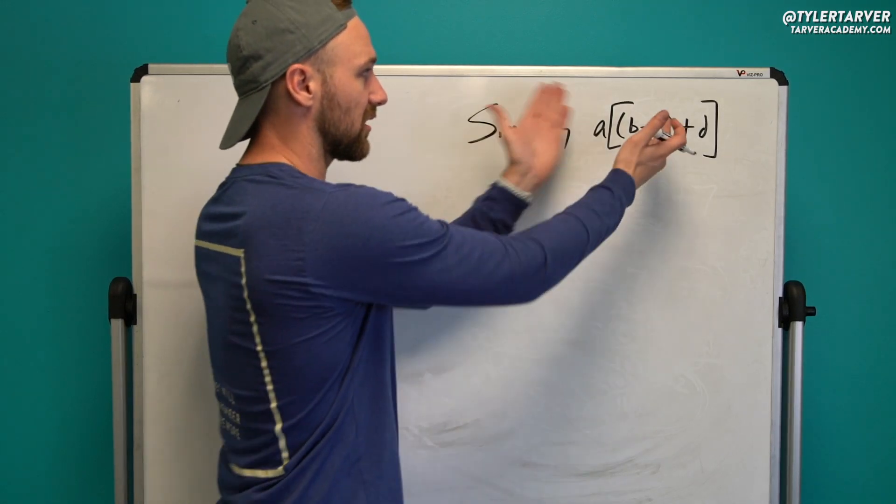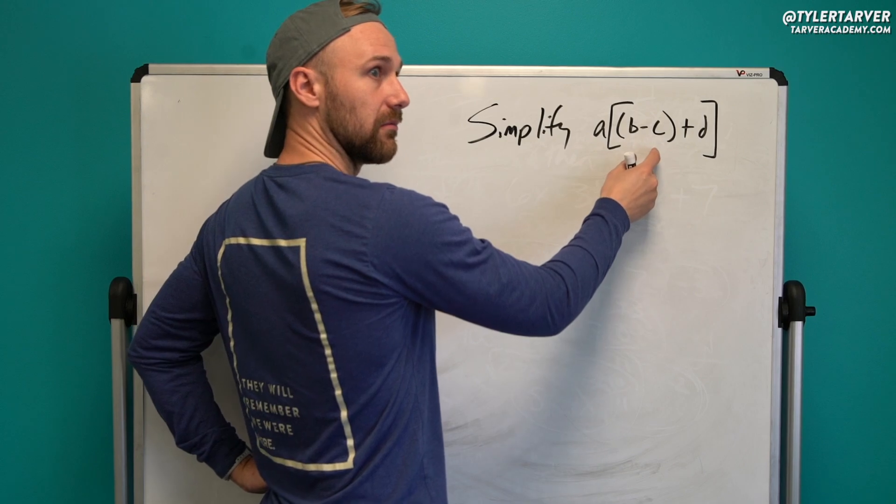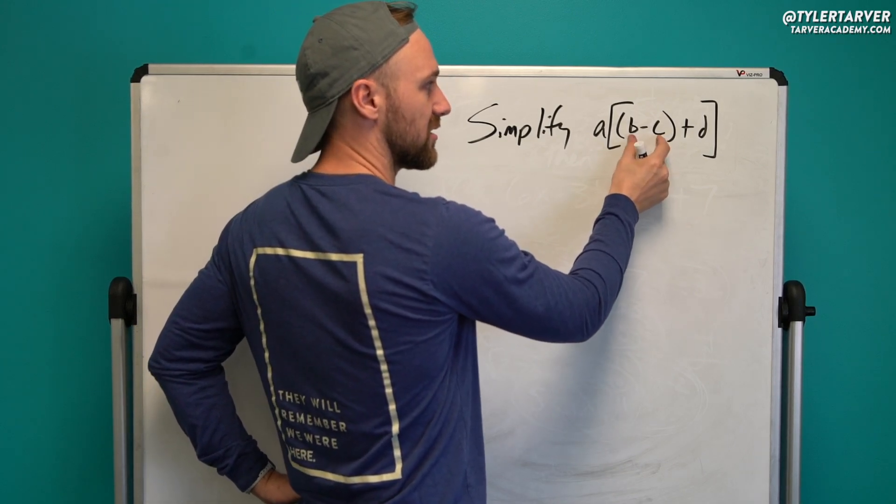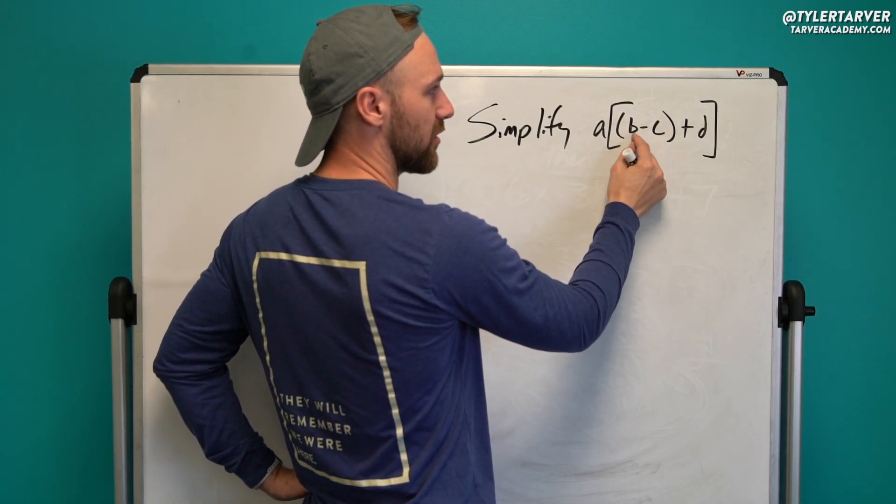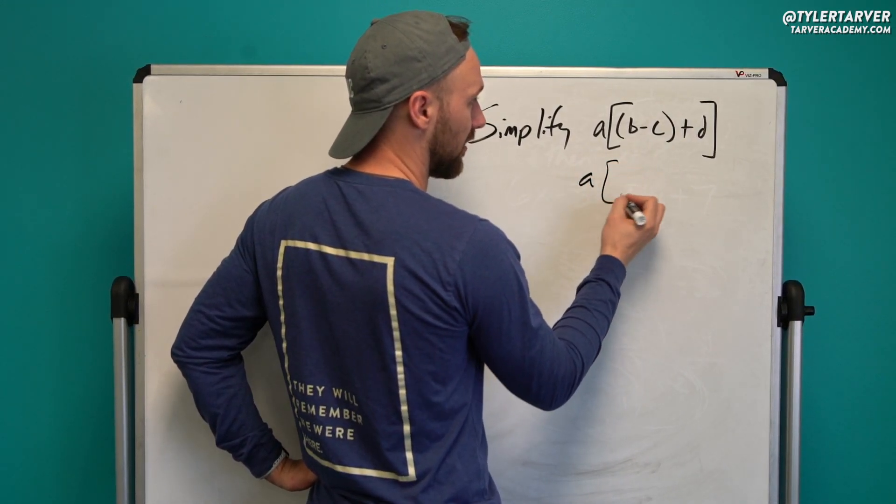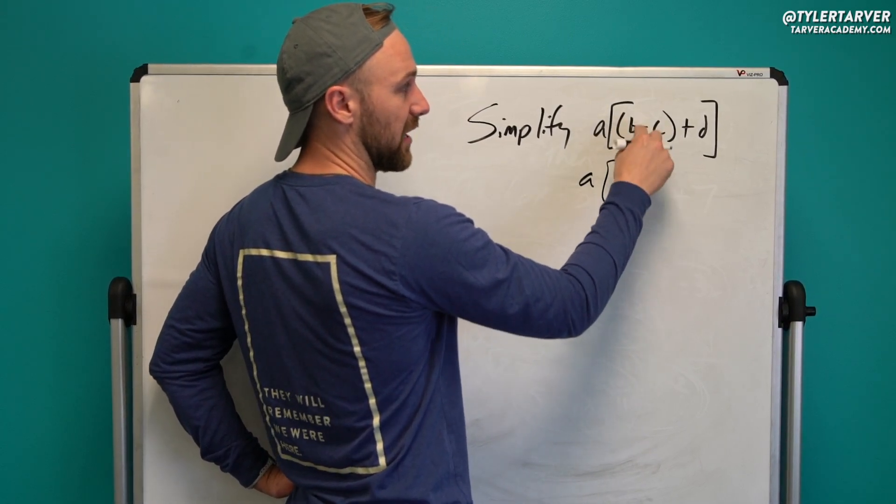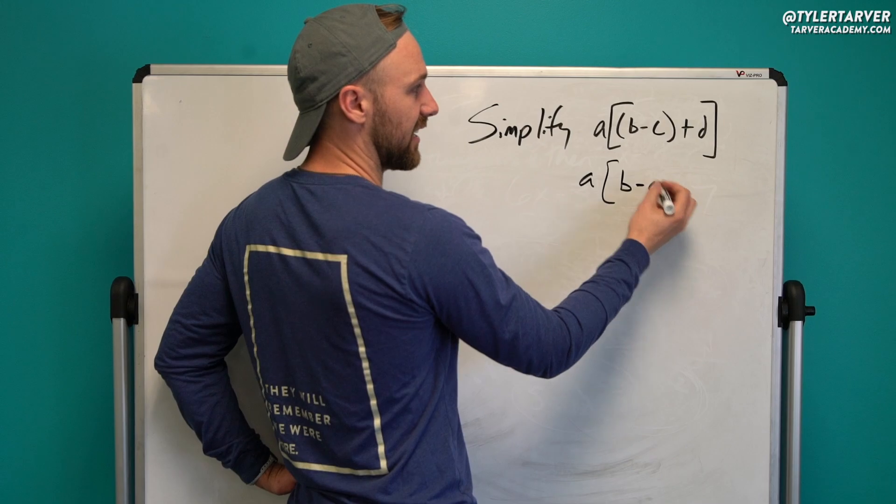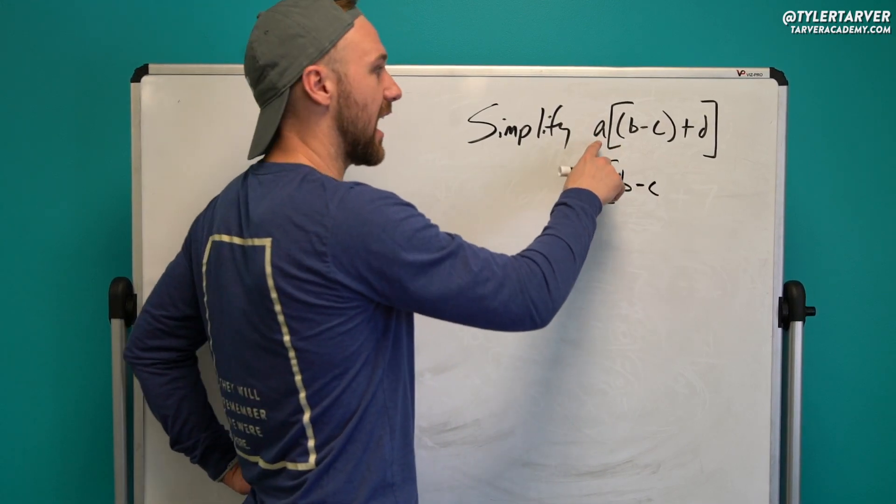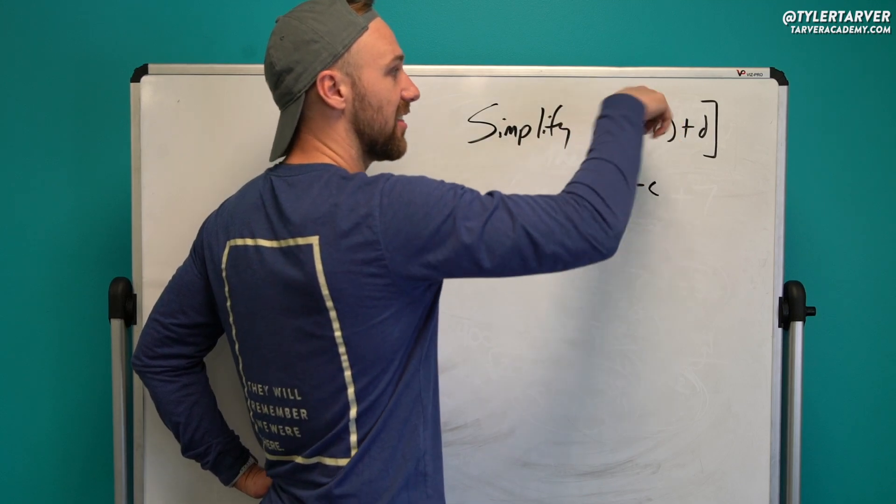Okay, so let's simplify this. We're going to start at the very center. B minus C. Is there anything I can do to simplify that? Is there anything I can do to subtract those? No, there is not. So I'm going to bring everything else down. B minus C. If you can't simplify it and there's nothing that's being multiplied in there, I leave it as it is. I'm not going to distribute that A yet because I got to work everything in those parentheses, and then I can distribute.